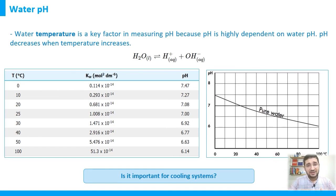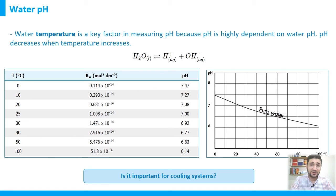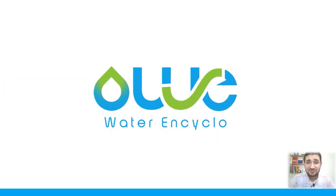Some pH meters include automatic temperature correction, adjusting the reading to a reference temperature of 25°C or 20°C even when the sample is at a higher temperature. However, not all instruments have this feature, so always note the temperature when measuring pH. Never directly compare pH readings taken at different temperatures without accounting for that difference.